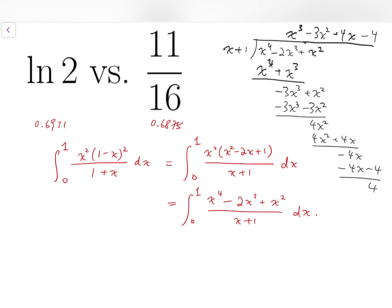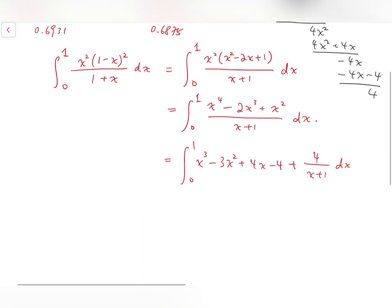So from the long division, we know that it's integrating x cubed minus 3x squared plus 4x minus 4, with 4 as a remainder, so we have to add 4 over x plus 1 dx.